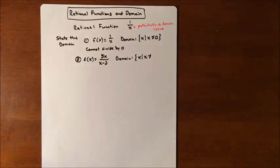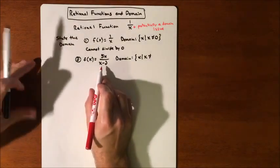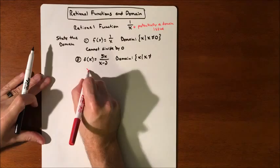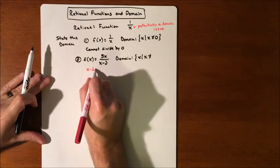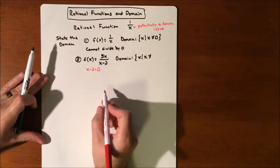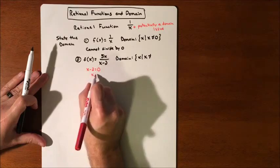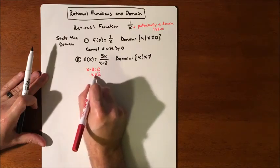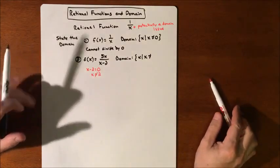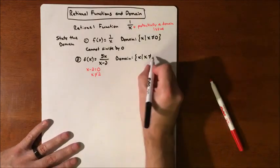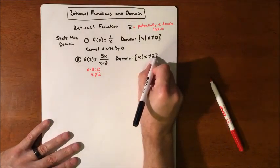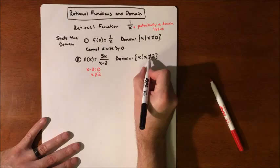So our X's such that X cannot equal two is the number that makes the denominator equal to zero. And if you're not sure what it is and you can't quite see it because maybe the denominator is a little bit more complicated, then really the math you're doing is taking the denominator and setting it equal to zero, find out what number that is, and that's what gets kicked out. That's the number that's going to make your denominator zero. So everything but two.